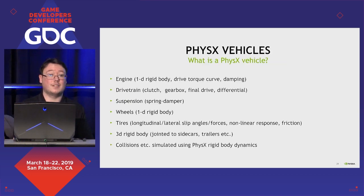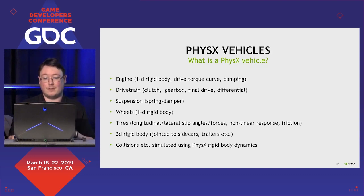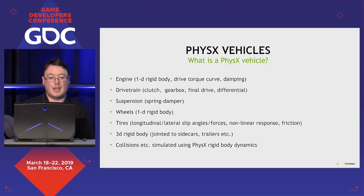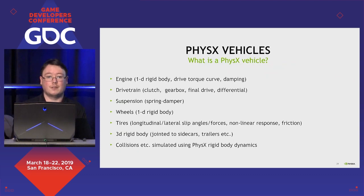So first, let's define what a PhysX Vehicle is. It has an engine, which is basically a 1D rigid body, with user- or manufacturer-defined drive torque curves and some damping for engine resistance. It has a drivetrain — the usual things you'd expect: clutch, gearbox, and all that. It has a suspension system using spring dampers with wheels that are connected, which are 1D rigid bodies that can only rotate around one degree of freedom. The tire model has longitudinal and lateral slip angles and slip forces.